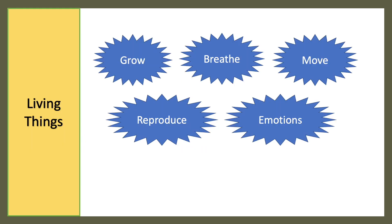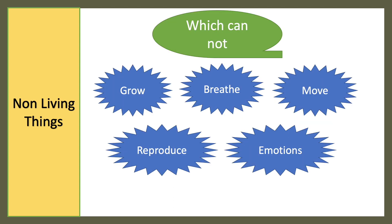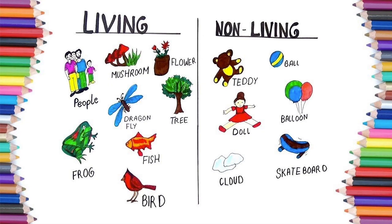Living things grow, breathe, move, reproduce, and show emotions, whereas non-living things do not grow, breathe, move, reproduce, or have emotions. Living things include human beings, fish, frog, and bird. Non-living things include teddy, doll, balloon, cloud, etc.